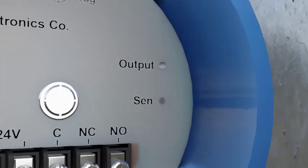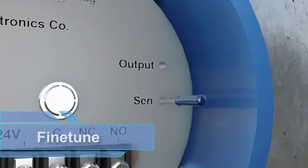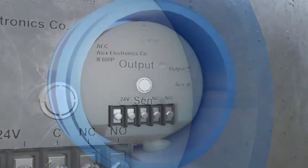If needed, you can fine-tune the output signal by turning the sensitivity pot clockwise to increase or counterclockwise to decrease.